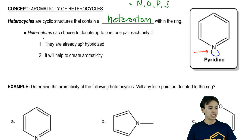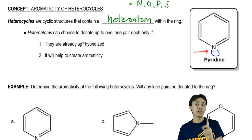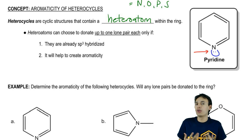Heteroatoms can choose to donate up to one lone pair each. That means, for example, oxygen has two lone pairs but only one of them is able to be donated into the ring. Now, why would oxygen want to donate one of its lone pairs to the ring?